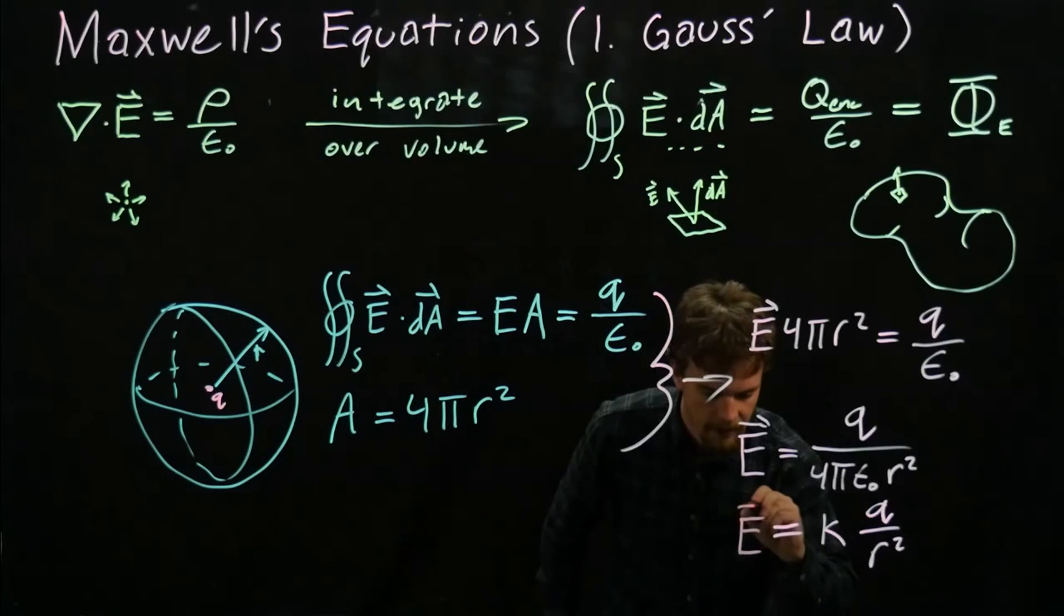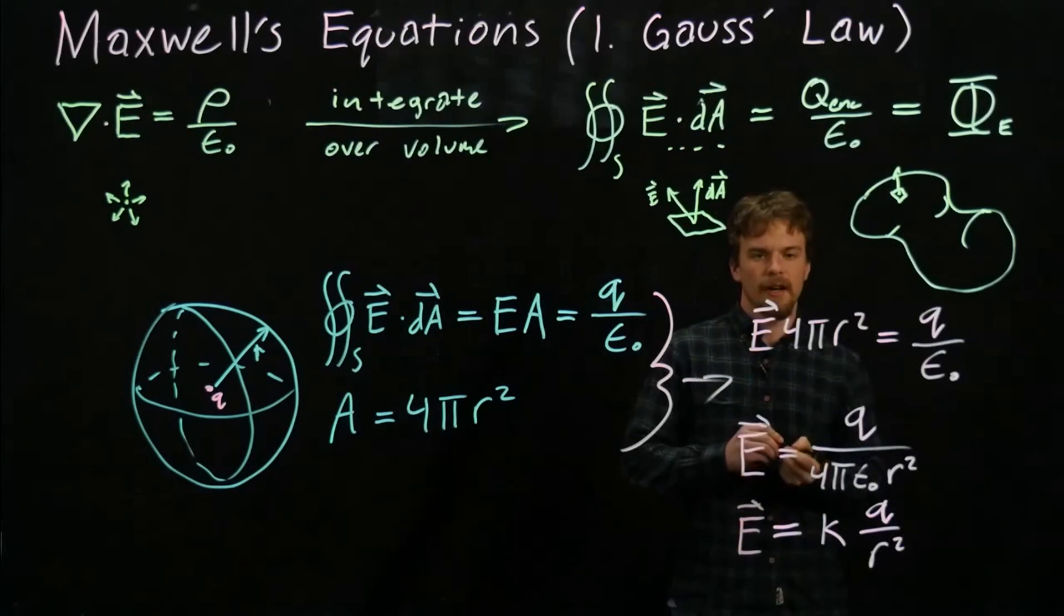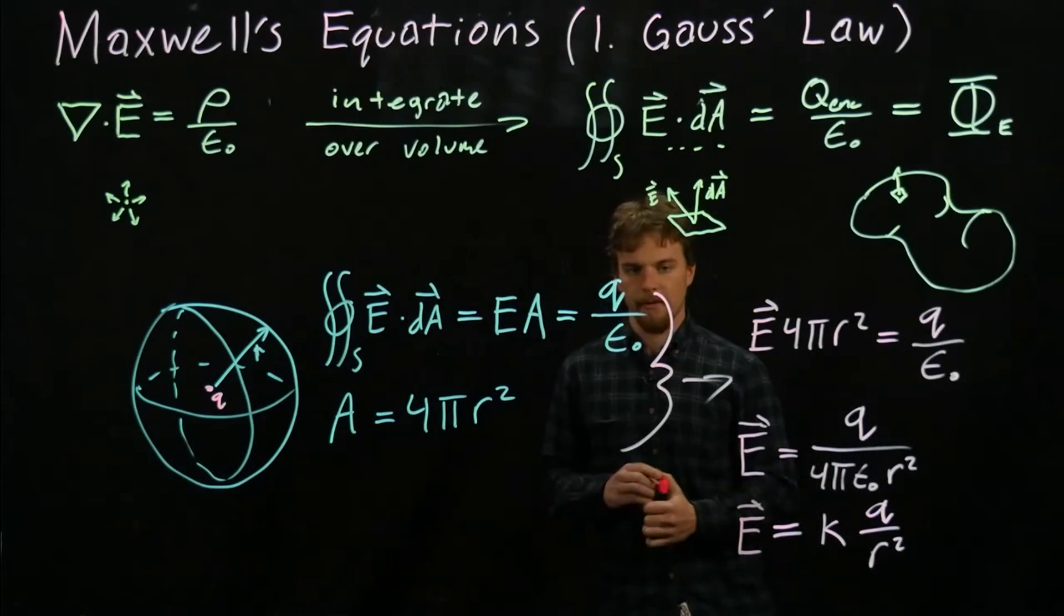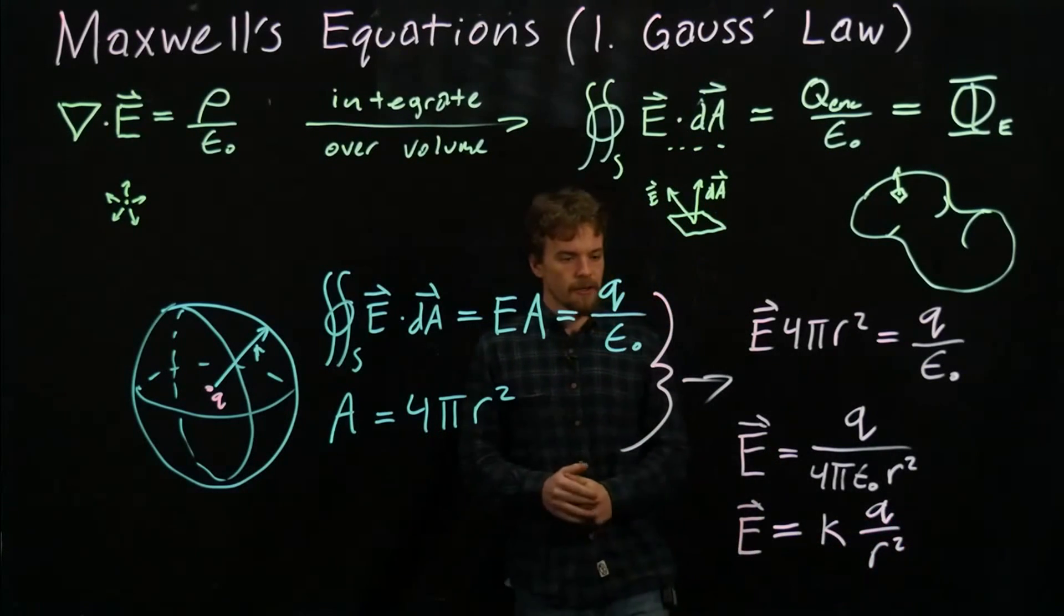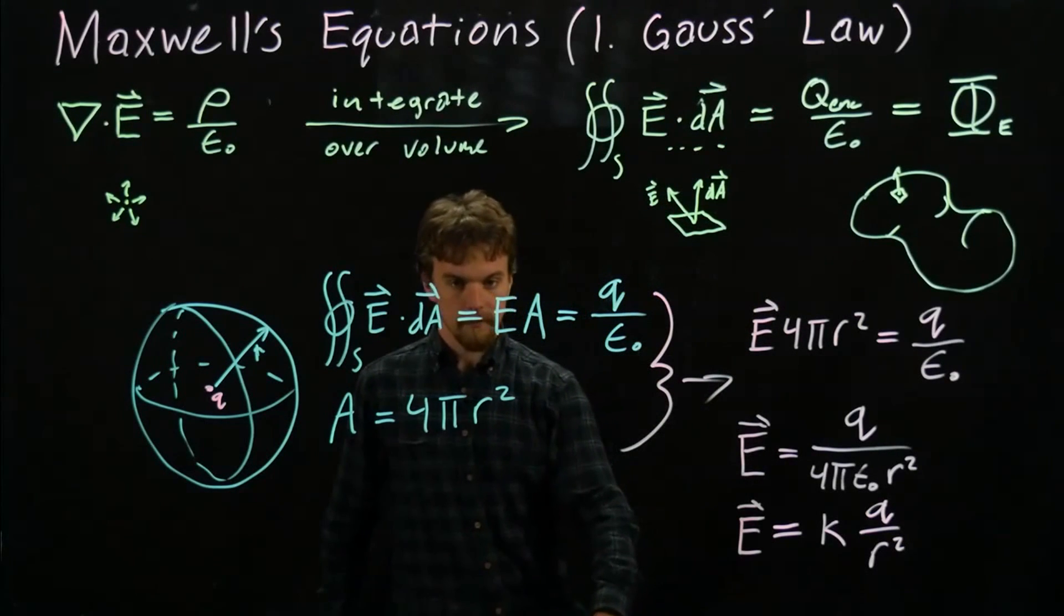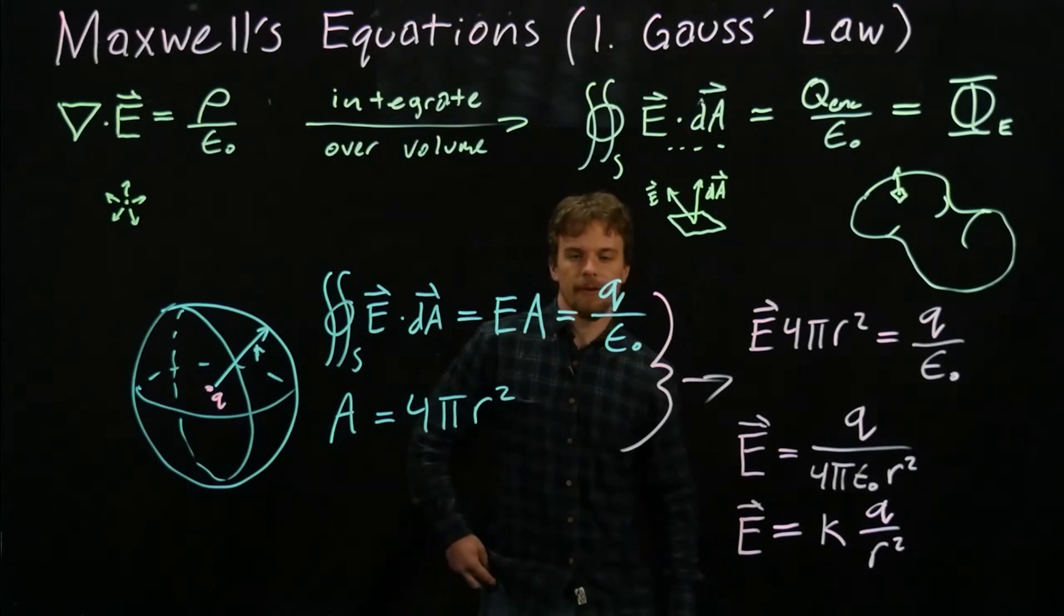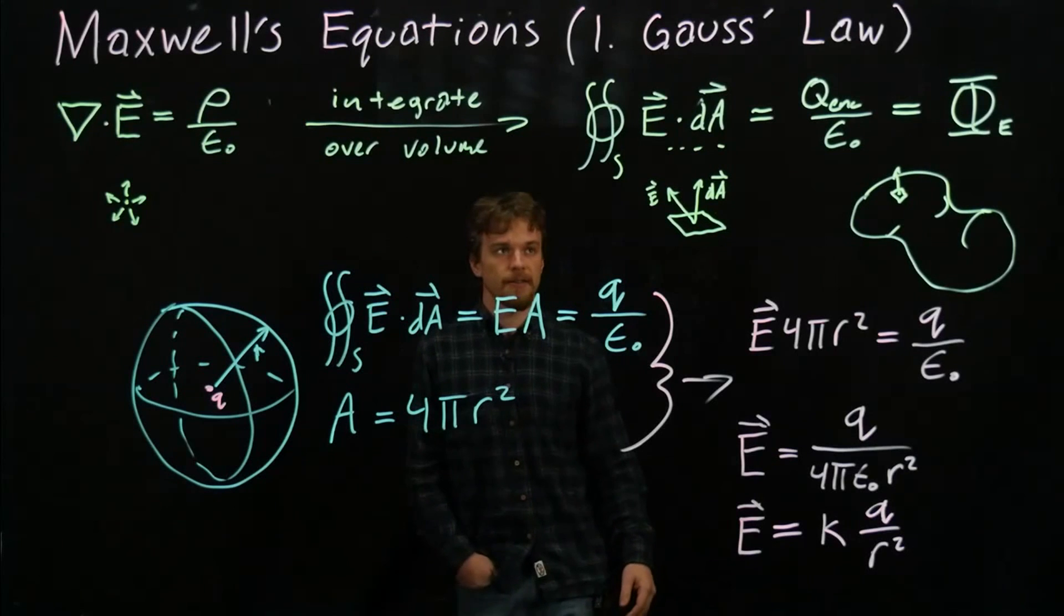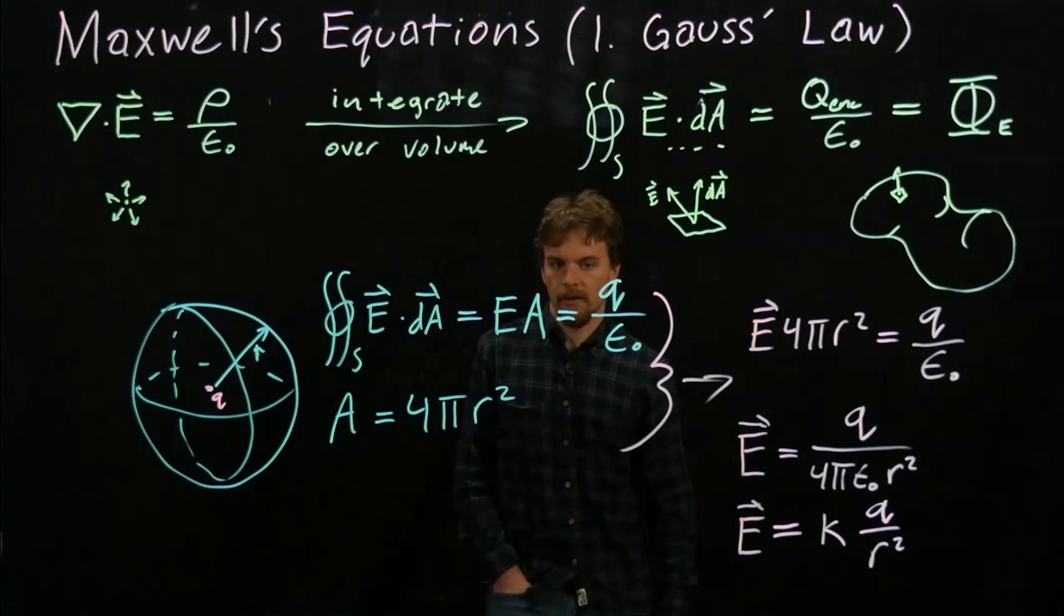That's really how it's derived—it's derived using Gauss's law. There are other derivations we can make with infinite lines of charge, infinite sheets of charge, but they all come from this fundamental law. That's the first law. Next week we'll make a video about Gauss's law for magnetic fields. Thank you very much.